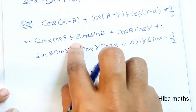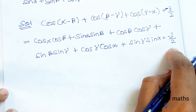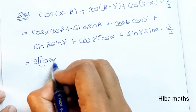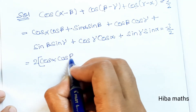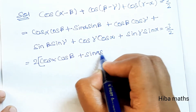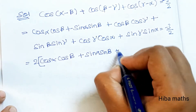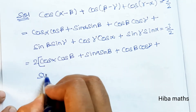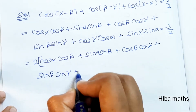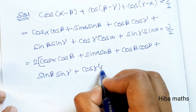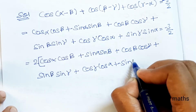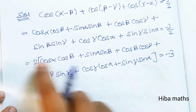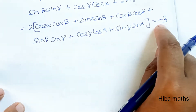The next step: multiply both sides by 2. So 2 times [cos α cos β + sin α sin β + cos β cos γ + sin β sin γ + cos γ cos α + sin γ sin α] is equal to -3.